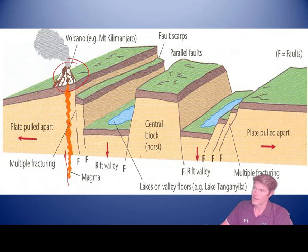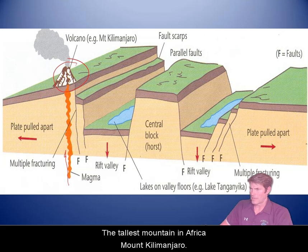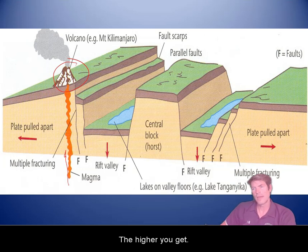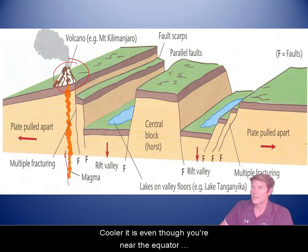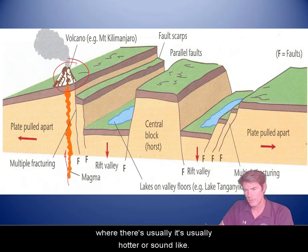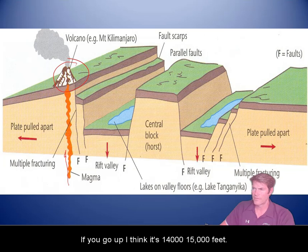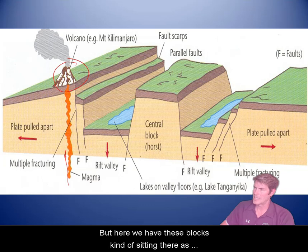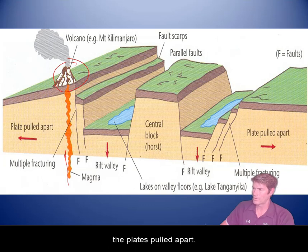Near Tanzania, you have the tallest mountain in Africa — Mount Kilimanjaro. Near the equator, yet snowy on top. Remember, the higher you get, the cooler it is. Even though you're near the equator where there's usually more sunlight, if you go up to around 19,000 feet, you're going to be pretty cold.